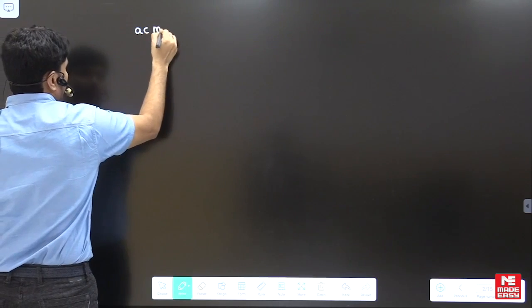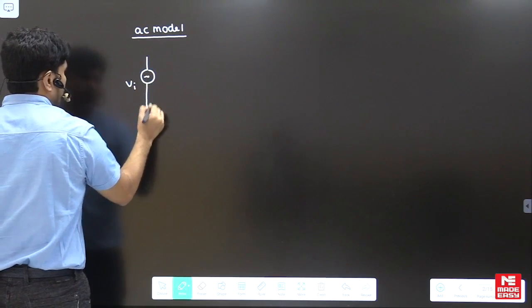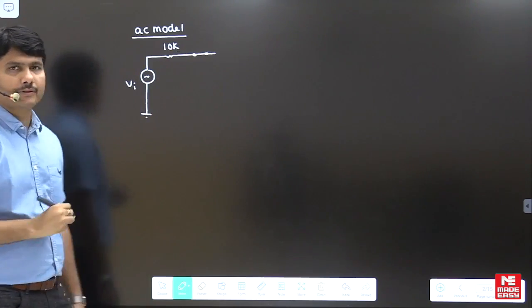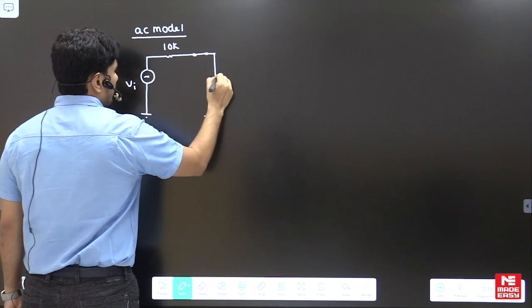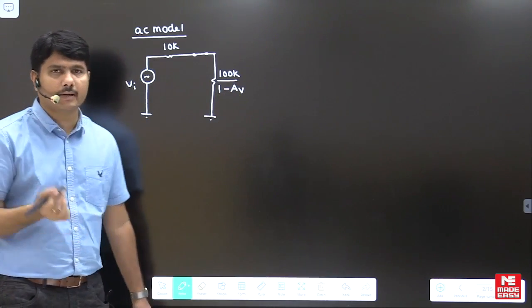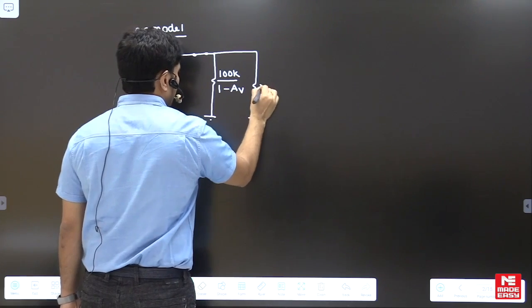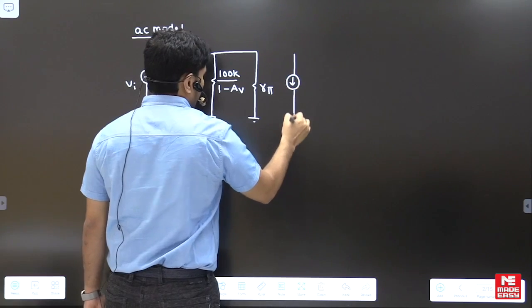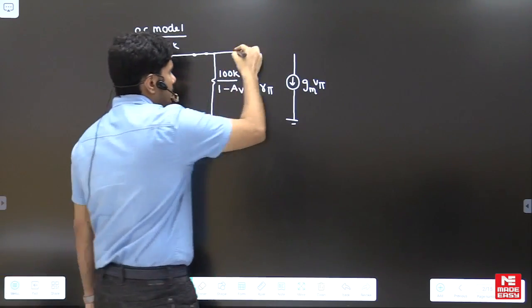Writing the AC model: we have a signal Vi, next a 10k resistor, then the coupling capacitor which is a short circuit for AC - Cc will be short. After that, the feedback impedance Z comes to the input side as 100k divided by (1 minus Av) due to Miller's effect. For the transistor, we have input impedance r_pi. In the AC model, next we have a current source gm times v_pi, applying the r_pi model.